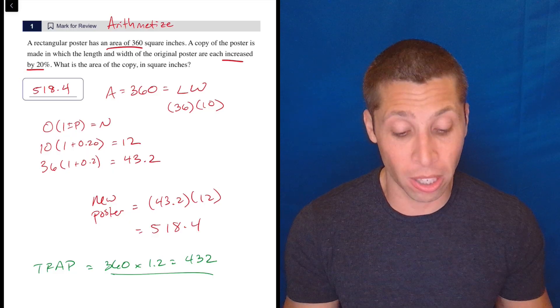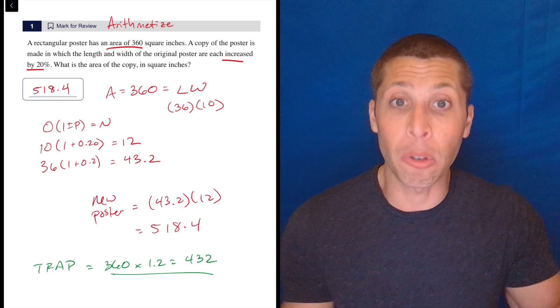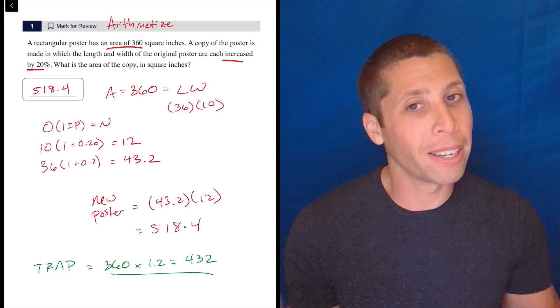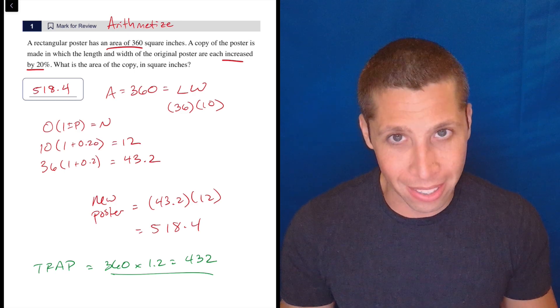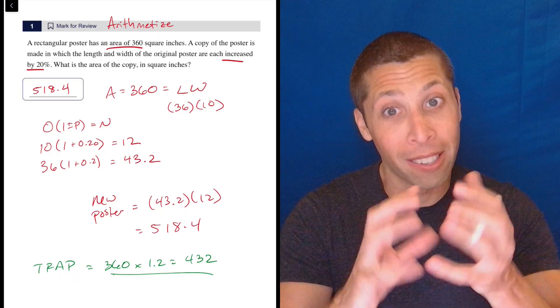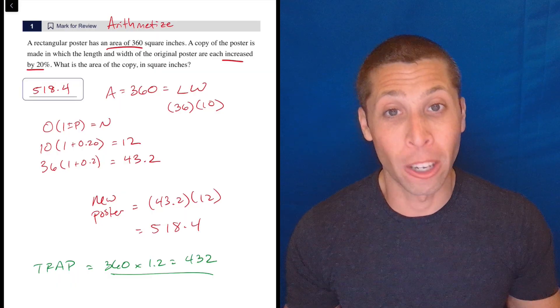This is obviously a hard question. We would know that on the real SAT because it would be later on in the section, but it's in a category of questions I'm calling geometry twists. So twists means they've twisted up the normal stuff to try to trick you.